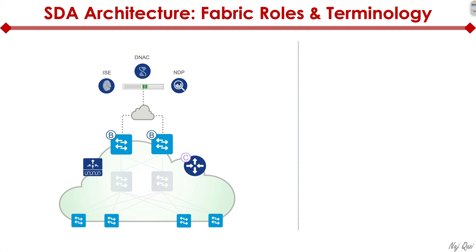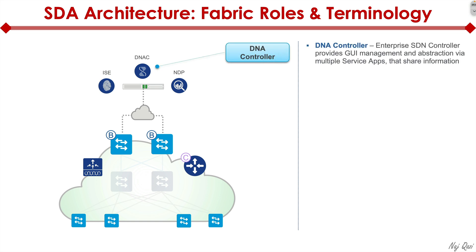The first and most critical device is the DNAC controller — a physical appliance you acquire from Cisco. In a practical production environment, you'd want a cluster of three forming a quorum for high availability and redundancy. This is the brain of the entire solution, providing the GUI-based portal where you log in and define all the constructs to configure your entire network.